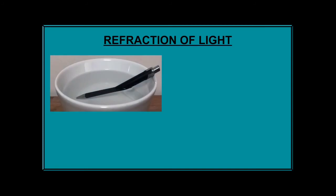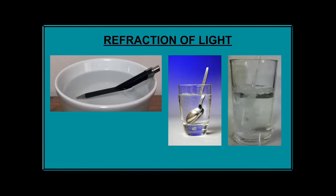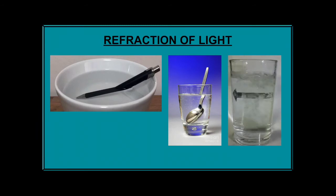Today we will be learning about another property of light expressed by these pictures. Look at this pen — it is actually a straight pen, but when we partially dip it in water, the part immersed in water seems to be bent at the surface. Look at the spoon inside a glass of water — it seems to be broken at the surface separating water and air. And this third picture shows an arrow pointing right, but when water is poured into the glass, the arrow appears to face the opposite direction — towards the left. All this happens due to the phenomenon called refraction of light.